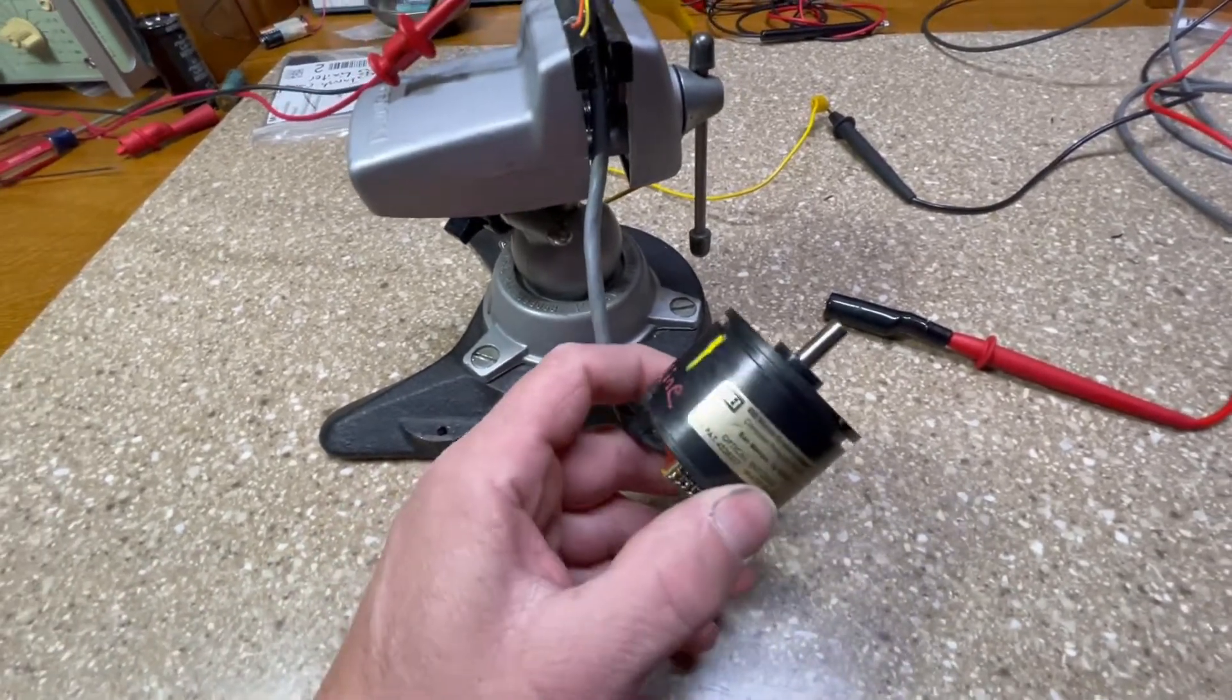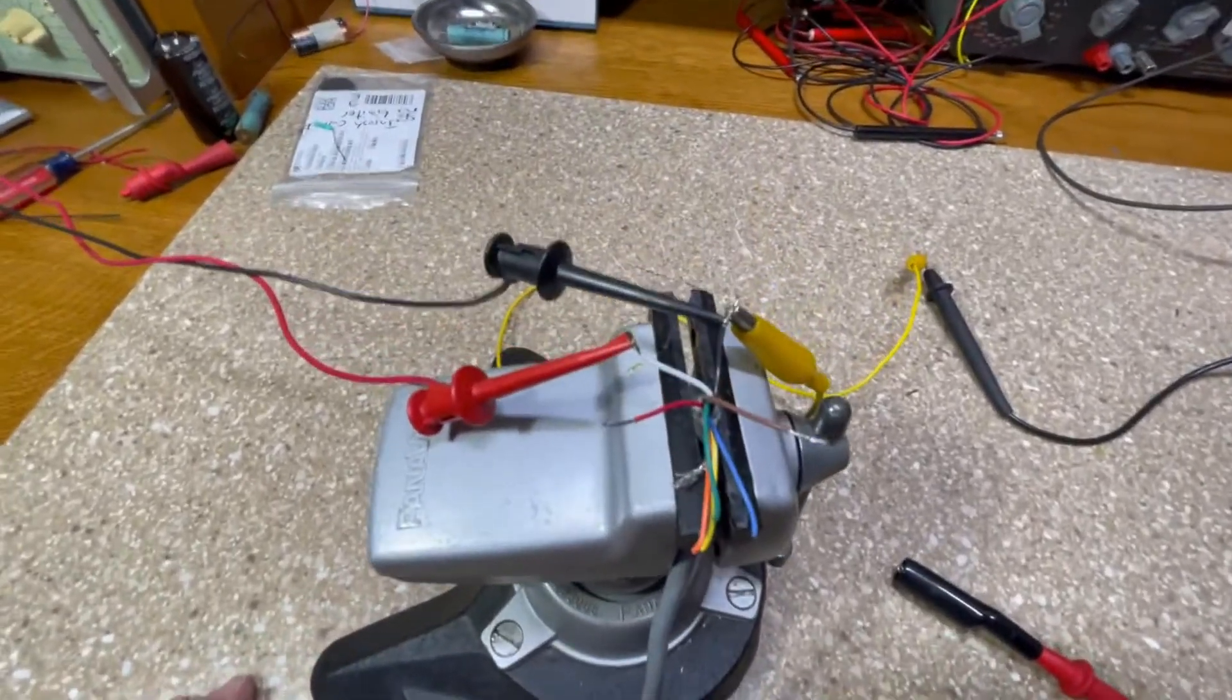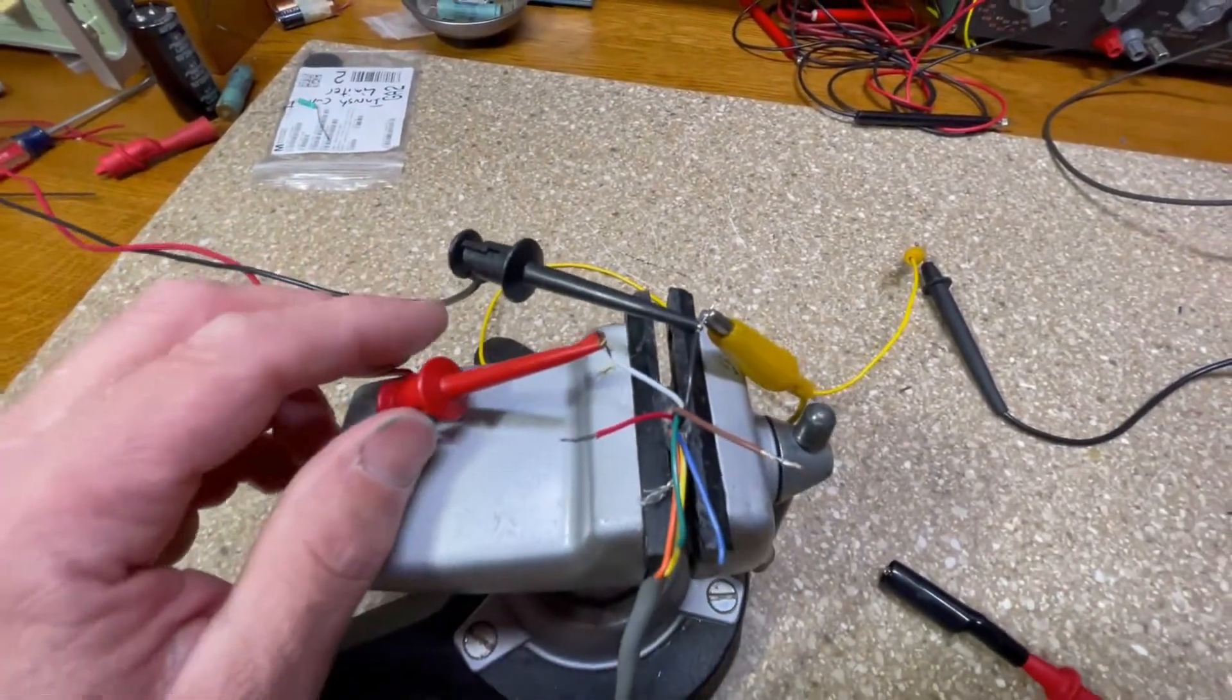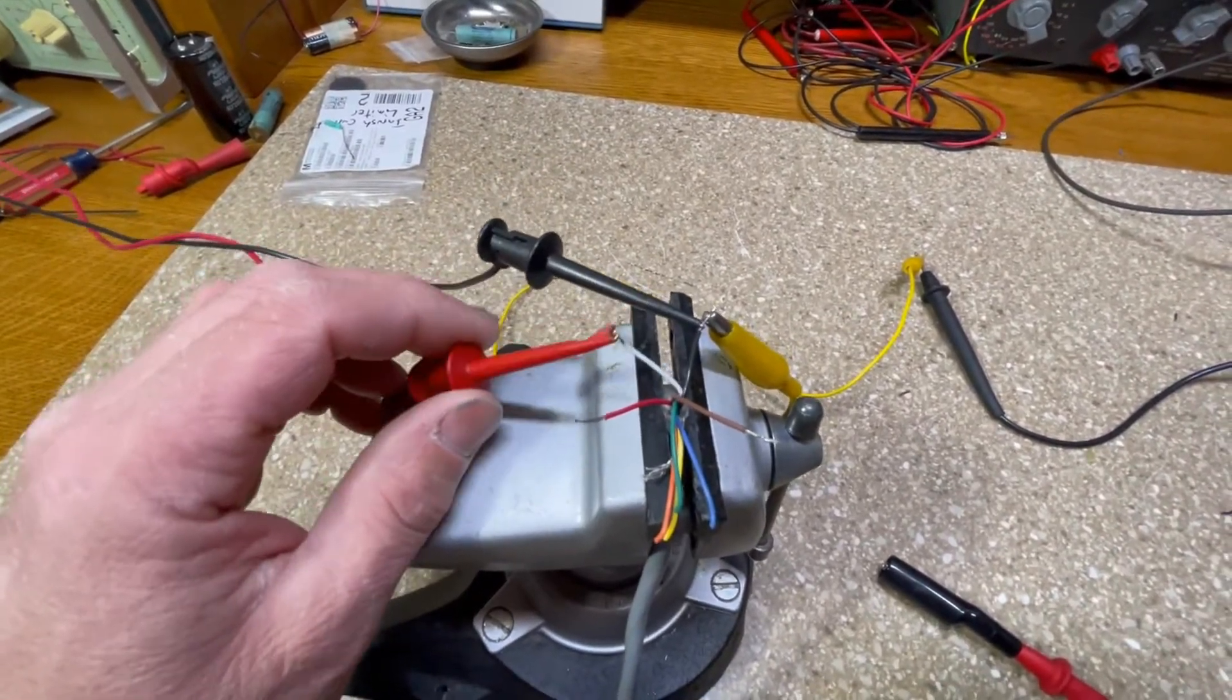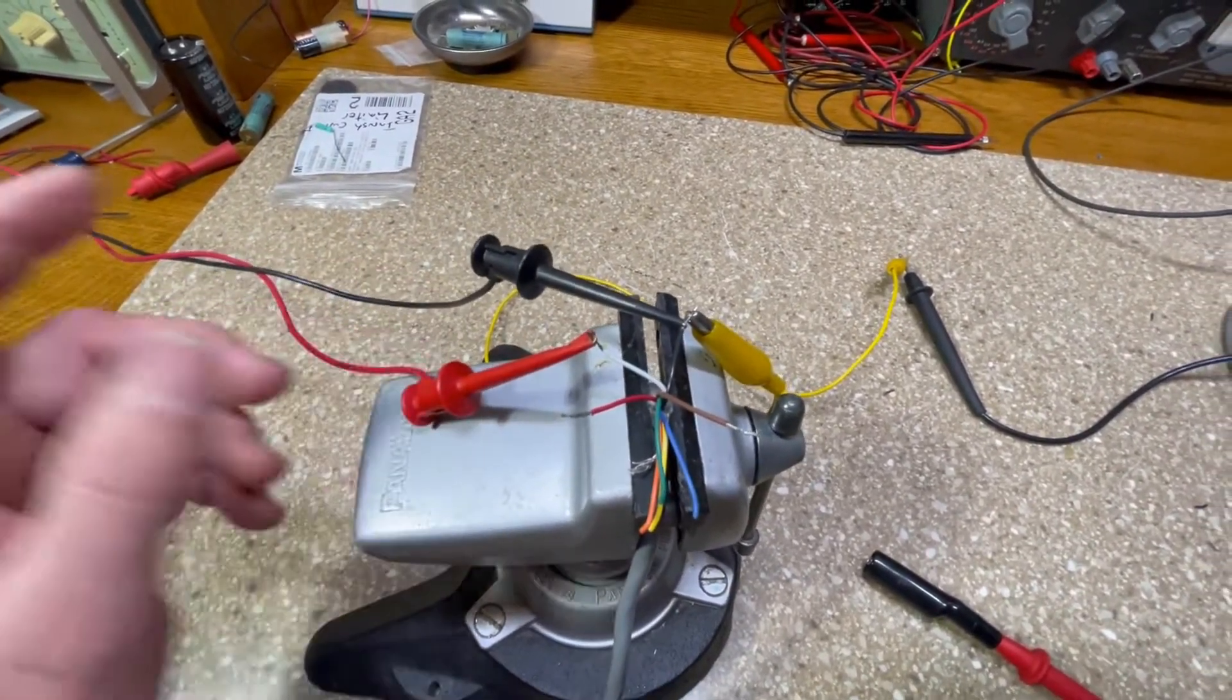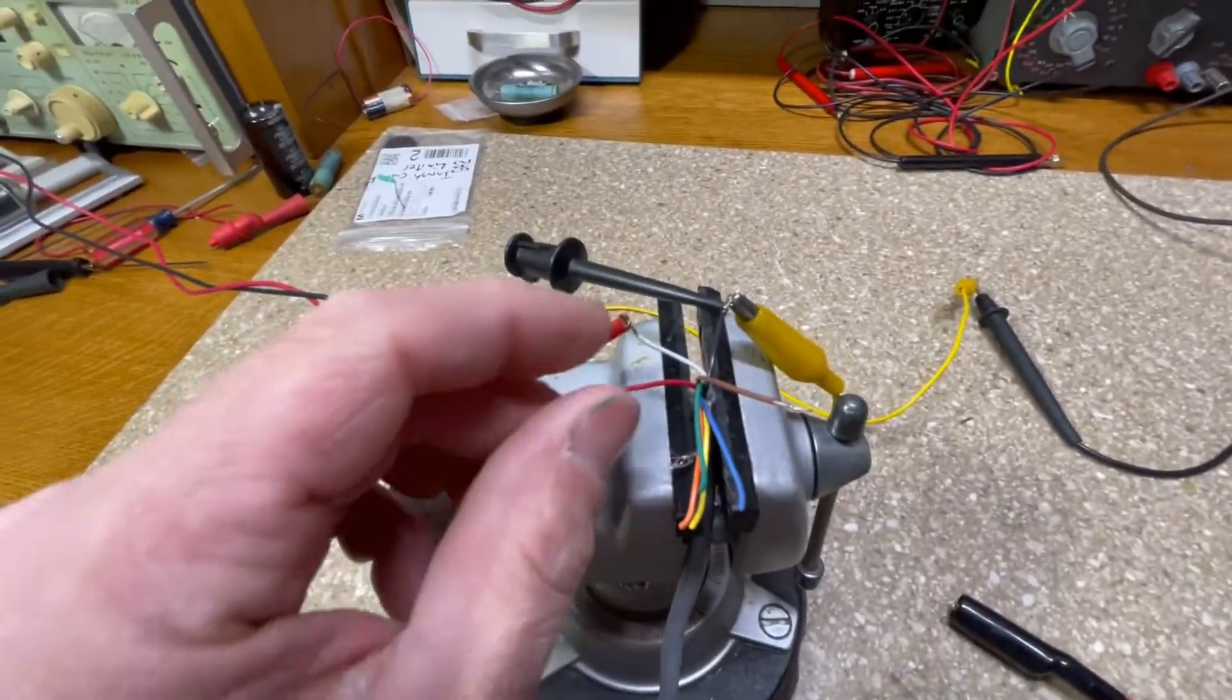I have an older BEI unit here, a thousand line encoder. I stripped the power leads. I have common here, the ground and plus five volt input. They're both connected to my power supply.